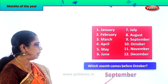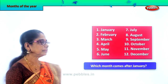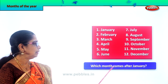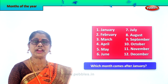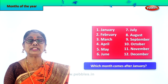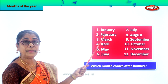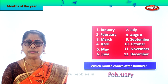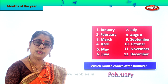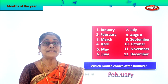Did you enjoy, children? Let's look at another question. Which month comes after January? The month that follows after January is February. Spell February — F-E-B-R-U-A-R-Y, February.